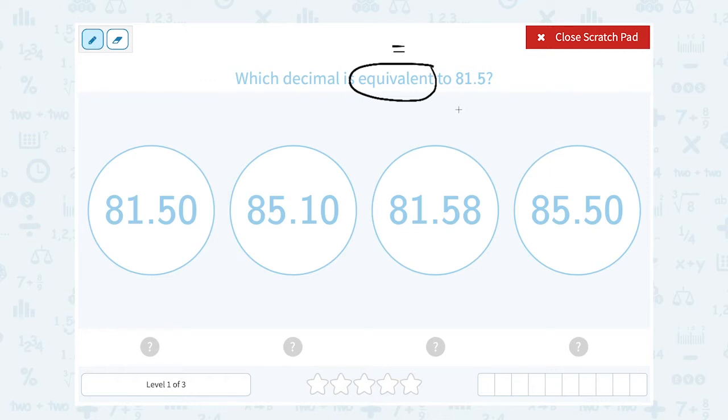First of all, I definitely know I have to have 81 in the ones place, or 81 as the whole number part. So I'm going to cross off 85.10 and 85.50.